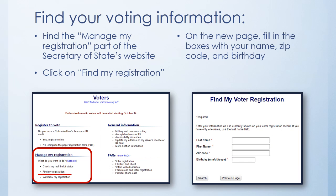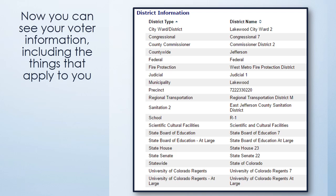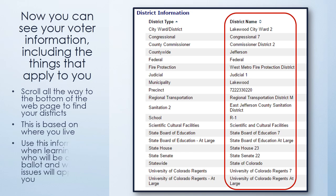On the new page, fill in the boxes with your name, zip code, and birth date. The zip code you need to use is the same one you used when you last updated your voter registration. Click on Search to find your information. Now you can see your voter information, including the things that apply to you. Scroll all the way to the bottom of the web page to find your districts — this is based on where you live. Use this information when learning about who will be on your ballot and what local issues will apply to you.